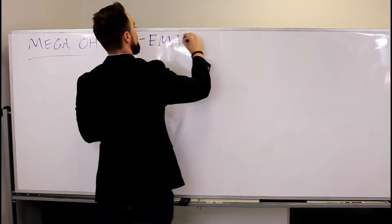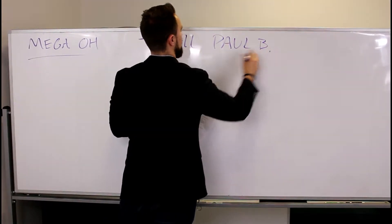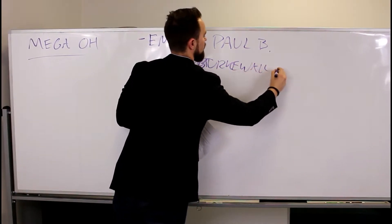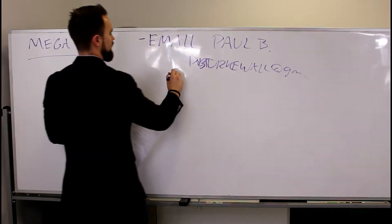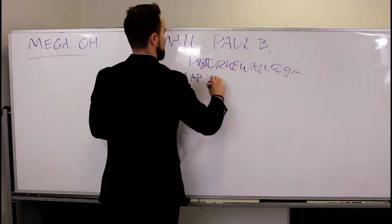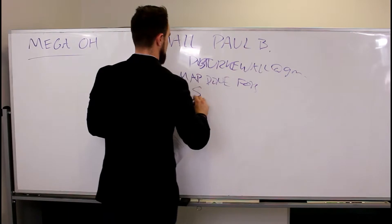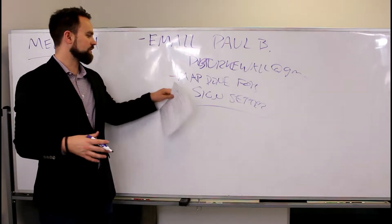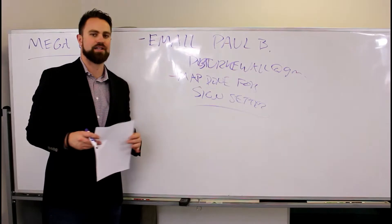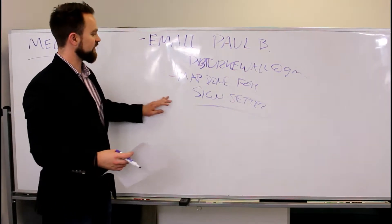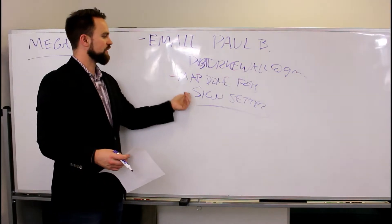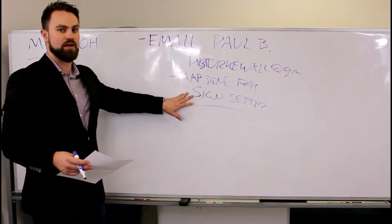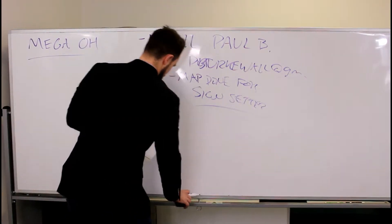The last couple of things: email Paul Burke at his Gmail and confirm we can get the map done for the sign setter. Keep in mind — sign setter is a privilege. Not all teams will always qualify; there will be weeks we don't assign a sign setter and you'll be responsible for your own signs. For the weeks we do have sign setter availability and you qualify, make sure the map is done with Paul Burke. You might say, 'Can you create the map, send it back to me, I'll do some revisions and get it out to the sign setter' — so we can get the 40 to 50 signs out there.